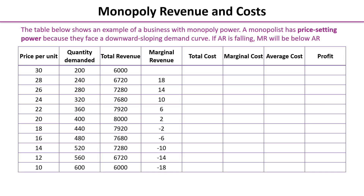We've got a table of a business with Monopoly power, so this means that they have price-setting power — the ability to set the price above the prevailing competitive price in the market. We know a firm has price-setting power or Monopoly power because they face a downward-sloping demand curve for their product or output.